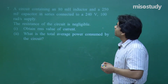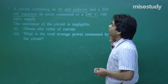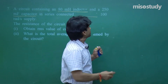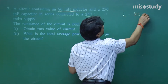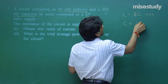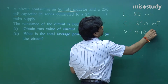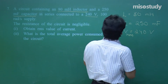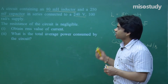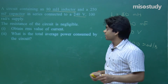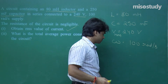Question number 7: a circuit containing an 80 mH inductor and a 250 mF capacitor in series, connected to a 240 V, 100 radian per second supply. The resistance of the circuit is negligible. Find the RMS value of current. The reactance Z = ωL − 1/(ωC). With ω = 100, L = 80×10⁻³, and C = 250×10⁻³.